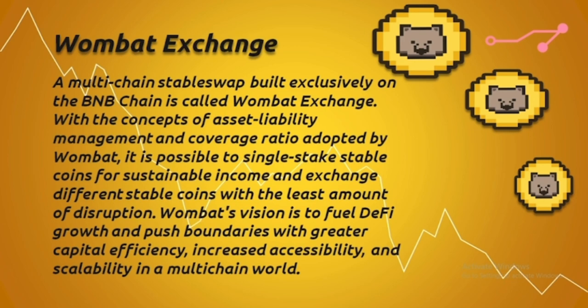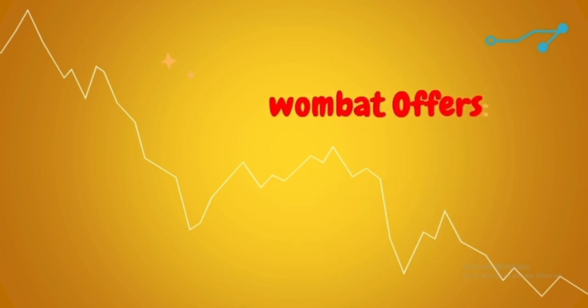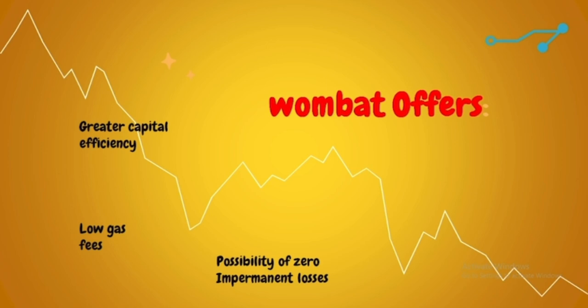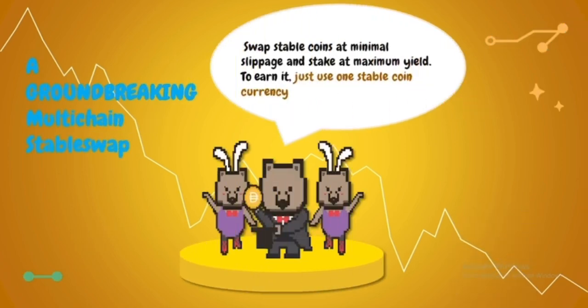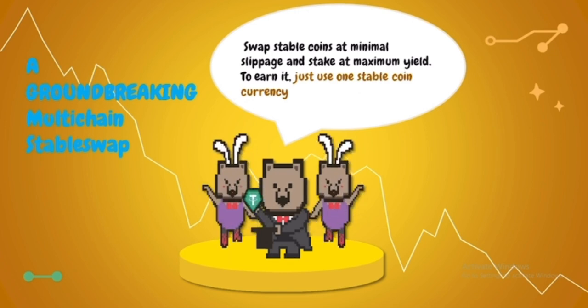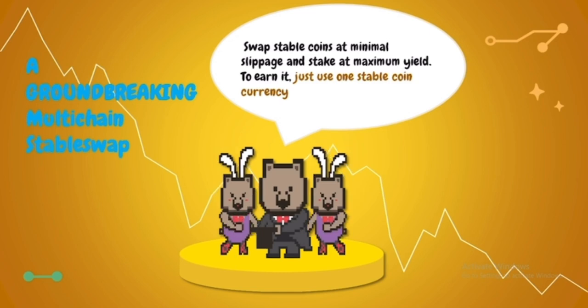The Wombat vision is to fuel DeFi growth and push boundaries with greater capital efficiency and increased accessibility and scalability in a multi-chain world. Wombat offers greater capital efficiency, low gas fees, possibility of zero impermanent losses, and single-sided staking pools. It is a groundbreaking multi-chain stable swap — swap stable coins at minimal slippage and stake at maximum yield to earn, using just one stable coin currency.